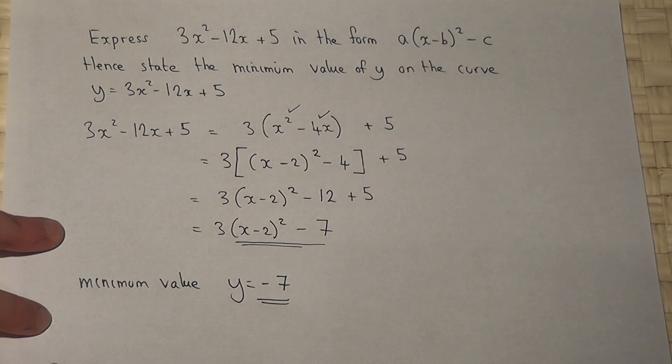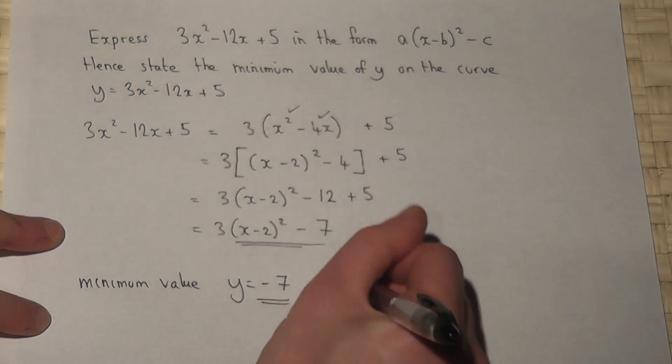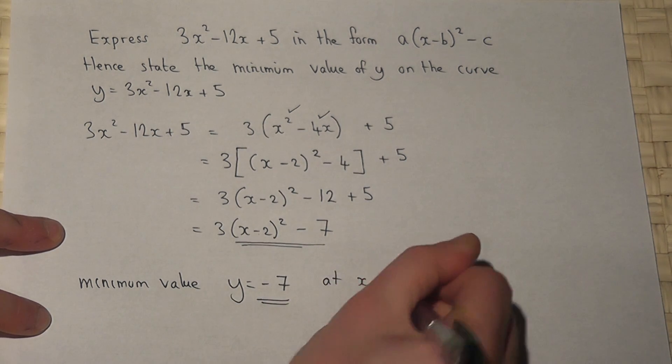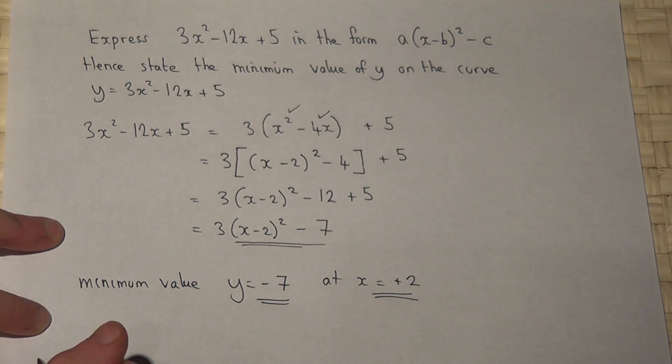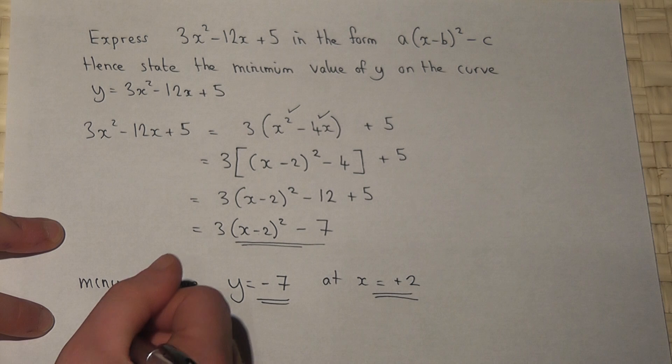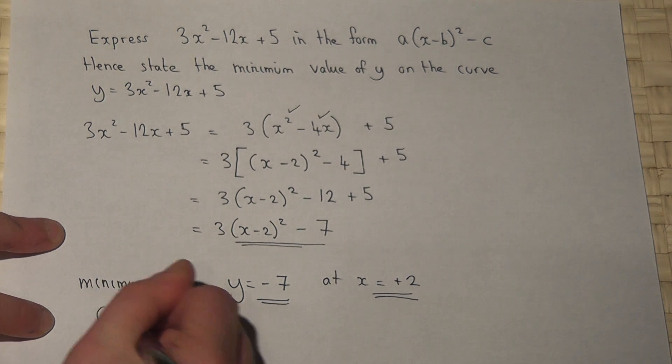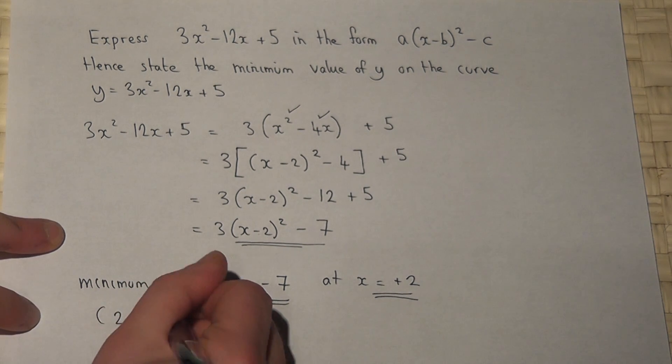And a little fact, this happens when x equals plus 2. So I can therefore write down the coordinate of the minimum value as 2, comma, minus 7.